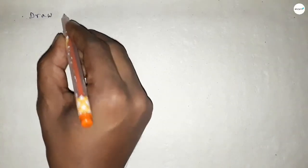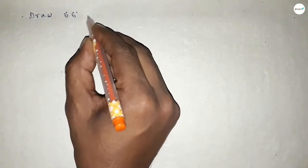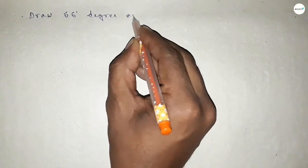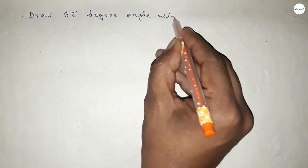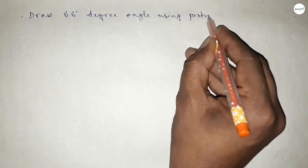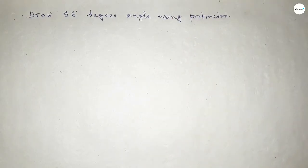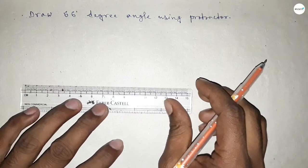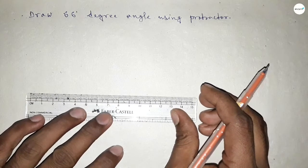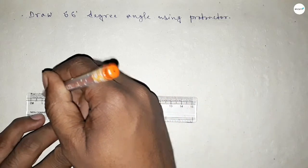Hi everyone, welcome to A-Size Chair classes. Today in this video we have to draw a 66-degree angle using a protractor. So let's start the video. First of all, we have to draw a straight line of any length. So first drawing here a line.